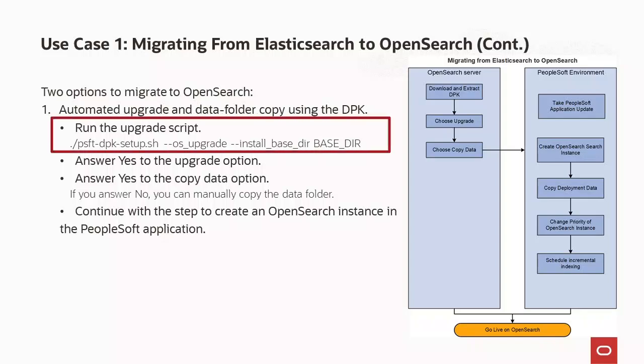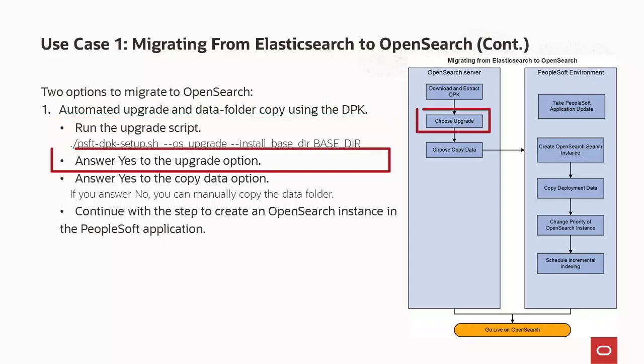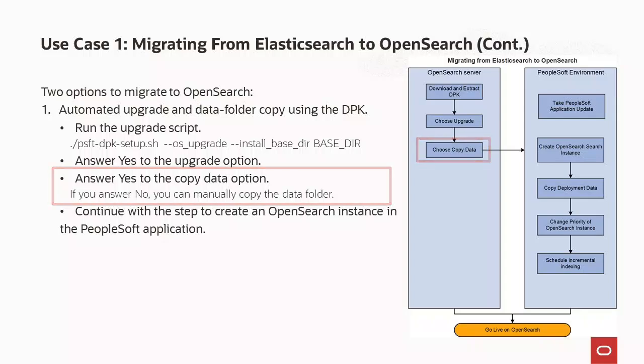The OSK DPK enables you to automate the process of installing OpenSearch and copying the indexed data from Elasticsearch to the OpenSearch data folder. To run the upgrade process, use the OSUpgrade command as shown. Answer YES to the prompt for upgrading, and answer YES to the prompt for copying data from Elasticsearch to OpenSearch. After the data copy is completed, you may proceed with the steps listed on the PeopleSoft application.